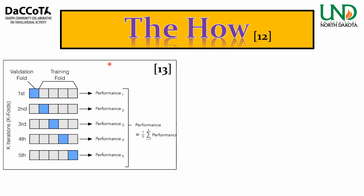With cross-validation, starting with k-fold: you shuffle the dataset randomly and split it into k groups. One group is held out as test/validation data and the rest is training data. You fit a model on the training data, evaluate it, then evaluate on the test set, retaining the evaluation score and discarding the model. You do this for each group in turn, then summarize the skill of the model using the sample of evaluation scores.